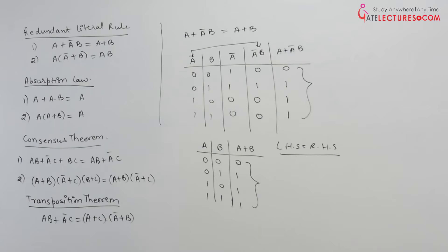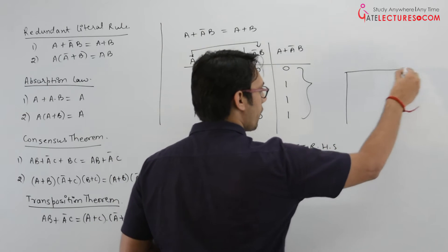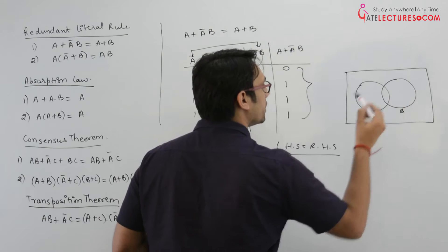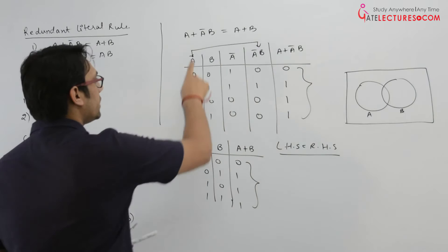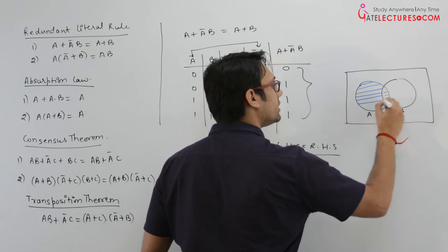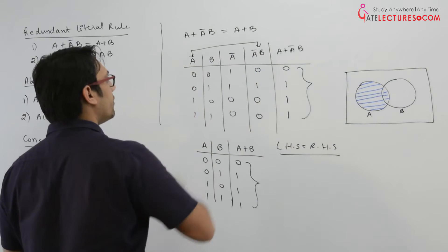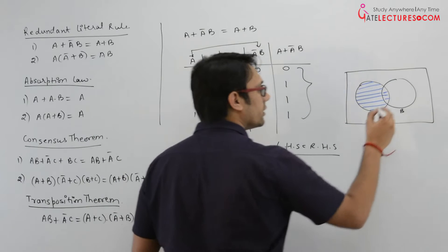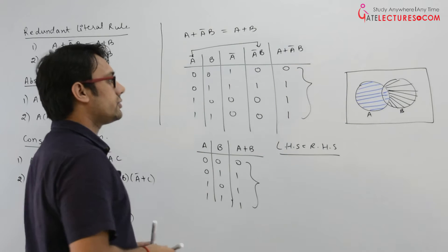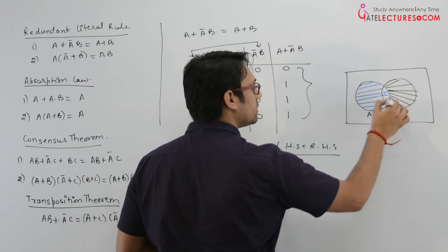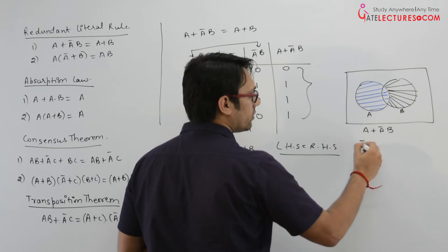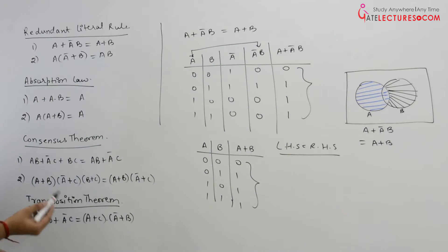We can also visualize this with a Venn diagram. Assume this is the universe, this is denoting A, and this is denoting B. A complement B is the part of B which is not in A. And A plus B is adding the A region with that part. As you can see, A plus A complement B is equal to A plus B with the help of this diagram. It is very simple to prove.